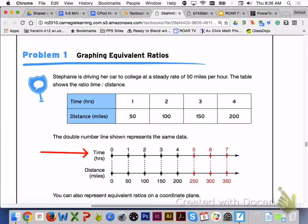The intervals for my time in hours are going up by 1, so I should have 5, 6, and 7 added to that number line. And the distance in miles is increasing by 50, so I should have 250, 300, and 350.